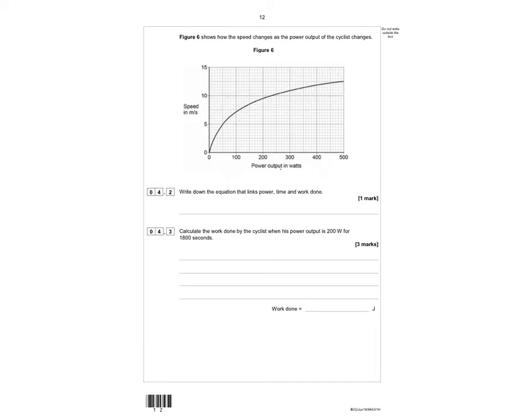Now we've glanced at the graph, let's look at the question. So 4.2, write down the equation that links power, time and work done. So work done equals power times time.